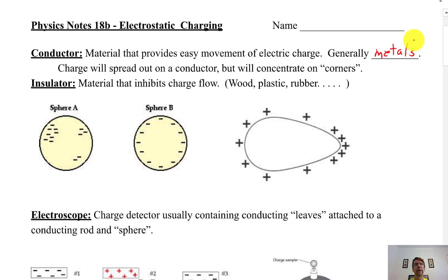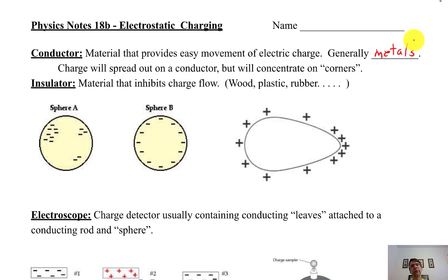All metals are basically good conductors — good conductors of electricity and heat. When we say movement of electric charge, we're really talking about electrons 99.9% of the time, because they're the loose particles orbiting the nucleus. It's hard to get protons out of the nucleus. So when you have a conductor, the charge spreads out in it.